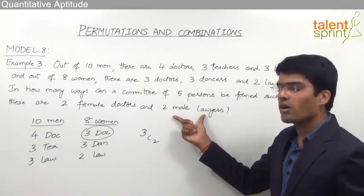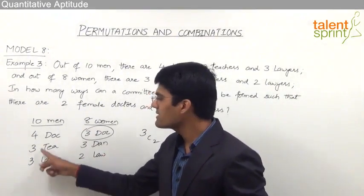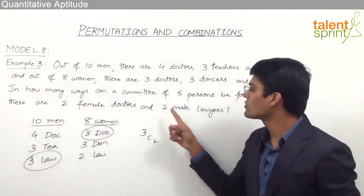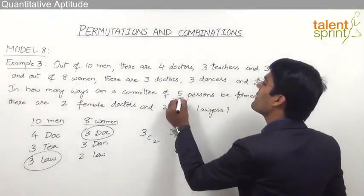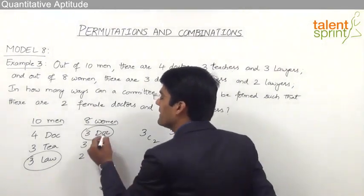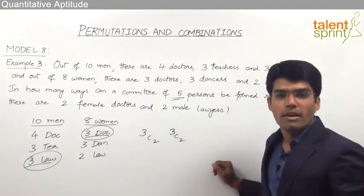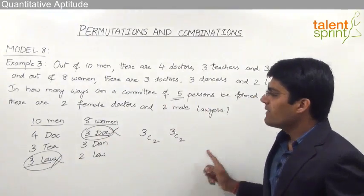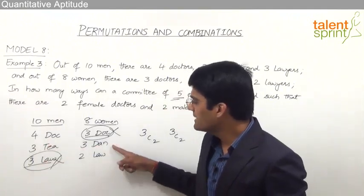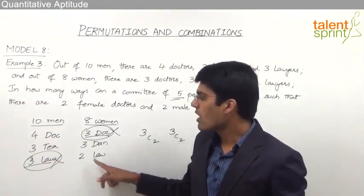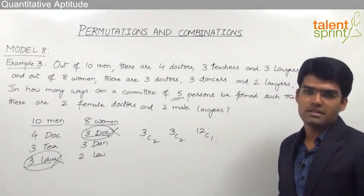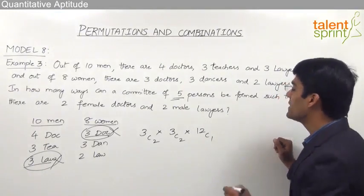We also need 2 male lawyers. There are 3 male lawyers, so out of 3 we select 2 in 3C2 ways. So far we have selected 4 persons. The committee needs 5, so one more person is required. This person can be any one of the remaining persons — excluding the 3 female doctors and 3 male lawyers already considered. The remaining persons are 4 male doctors, 3 teachers, 3 dancers and 2 female lawyers, giving 12 persons, so we select 1 in 12C1 ways.